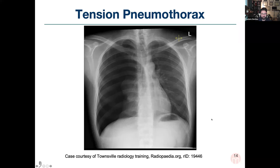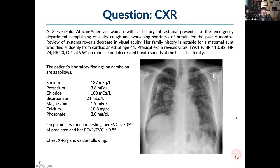Here's a multiple choice question. A 34-year-old African-American woman with a history of asthma presents to the emergency room with a dry cough and worsening shortness of breath for the past six months. We'll give everybody a chance to read through the question, then go to the answer choices.